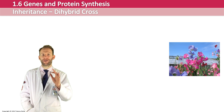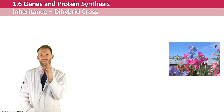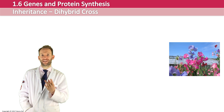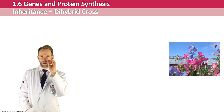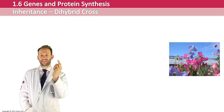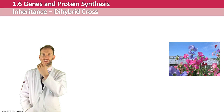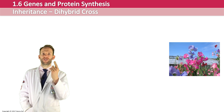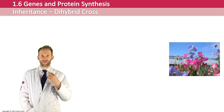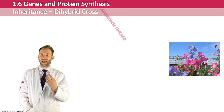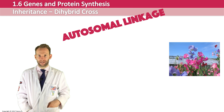Think about meiosis and the idea of chromosomes arranging themselves independently. If two genes we're interested in are on the same chromosome, then when that chromosome goes to one side, the other gene will still be on that same side as well. So when genes are on the same chromosome — what we call autosomal linkage — they may be inherited together.